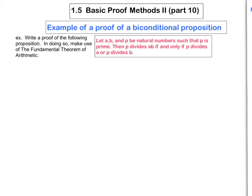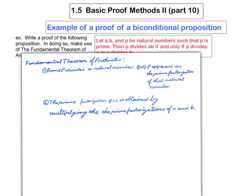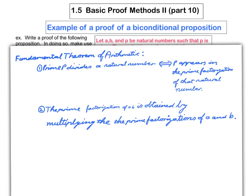It's worthwhile writing down those two facts we get from the fundamental theorem of arithmetic. Fact one: a prime p divides a natural number if and only if that prime p appears in the prime factorization of that natural number. Fact two: the prime factorization of a product ab is obtained by multiplying the prime factorizations of a and of b. When you begin writing up the forward direction of the proof, you should begin by stating these things as consequences of the fundamental theorem of arithmetic.